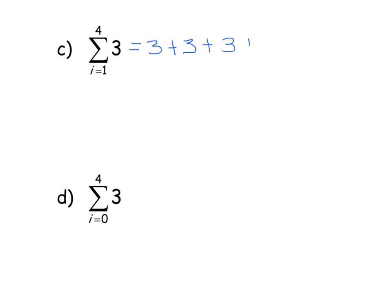When I plug in 3, the output will be 3. When I plug in 4, the output will be 3. So this 3 comes from i=1, that from i=2, that from i=3, and that from i=4. There's nothing to plug into, but this is the sigma notation way of saying add 3 four times, and this becomes 12.